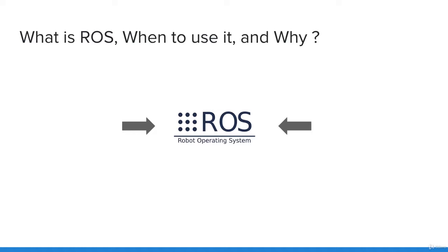You can use ROS whenever you want to create robot software that needs a lot of communication between its subprograms, or has functionalities that go beyond a very simple use case. For a robot that will just open a door with a servo motor when it detects movement, maybe you don't need ROS. But for a mobile robot which you want to control with a GPS and a camera, ROS might really help you.